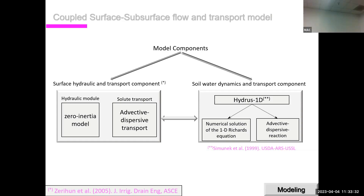A coupled surface-subsurface flow and transport model was also developed for surface irrigation basins and borders. It has two components: a surface hydraulic and transport component (developed in-house, including both hydraulic and solute transport modules) and a soil water dynamics and transport component using HYDRUS-1D, developed by the U.S. Salinity Laboratory in Riverside.